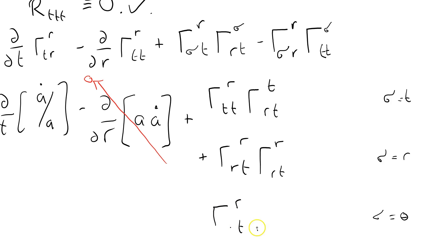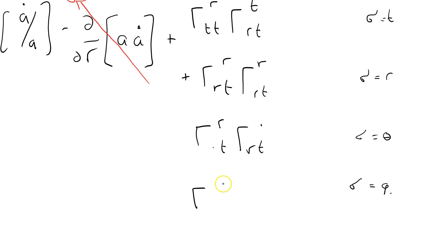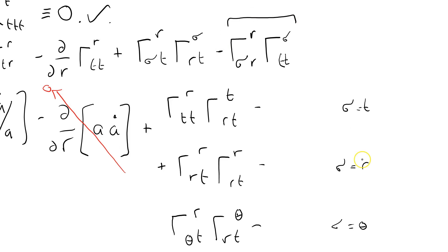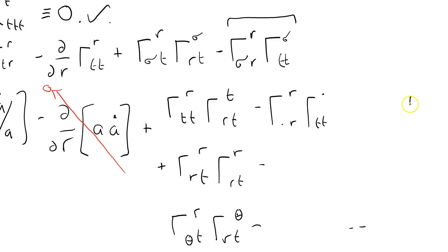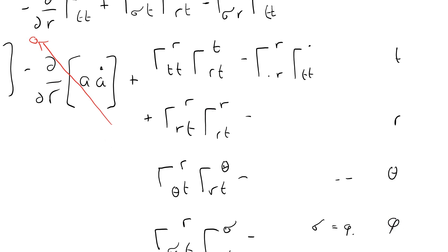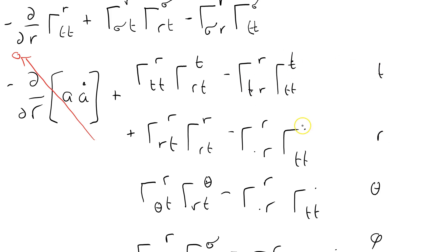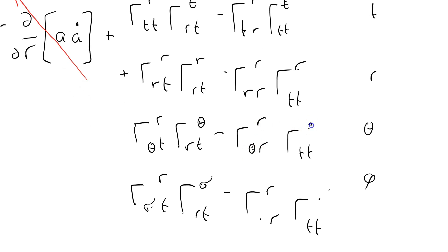And I'm writing the skeleton as Christoffel(R, something, T) times Christoffel(something, R, T), and the same structure for theta and phi. Then for the minus terms, expanding likewise: minus Christoffel(R, something, R) times Christoffel(something, T, T), with the something being T, R, theta, and phi respectively.